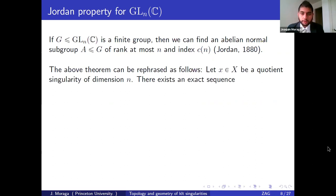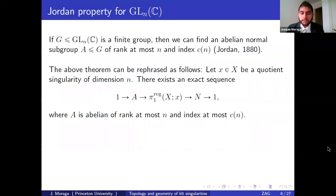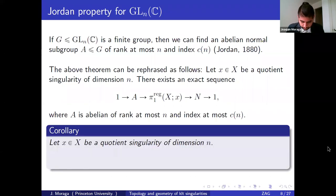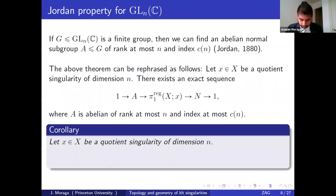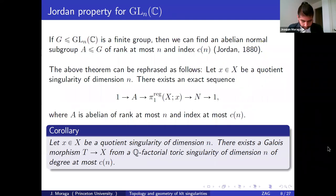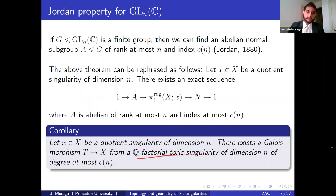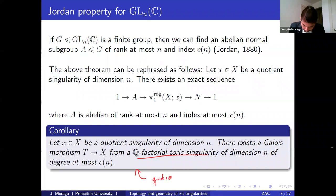You can rephrase this theorem as follows: for a quotient singularity, there exists an exact sequence where A is abelian of rank at most N and index at most C_N. As a corollary, if you have a quotient singularity, then there exists a Galois morphism from a Q-factorial toric singularity of degree at most C_N. Essentially, A is an abelian action on a smooth germ — you can diagonalize this action and the quotient will be a Q-factorial toric singularity. The way I like to phrase it: quotient singularities are almost toric.